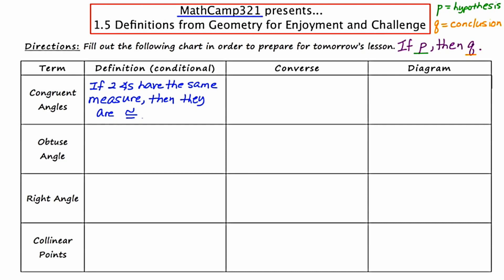I'm going to underline the hypothesis in green — that's everything preceding the word 'if,' which is 'two angles have the same measure' — and underline the conclusion in orange, which is everything following the word 'then.' We make a big deal about the hypothesis and conclusion because there is this other form called the converse, which occurs when you interchange the hypothesis and the conclusion, written as if Q, then P.